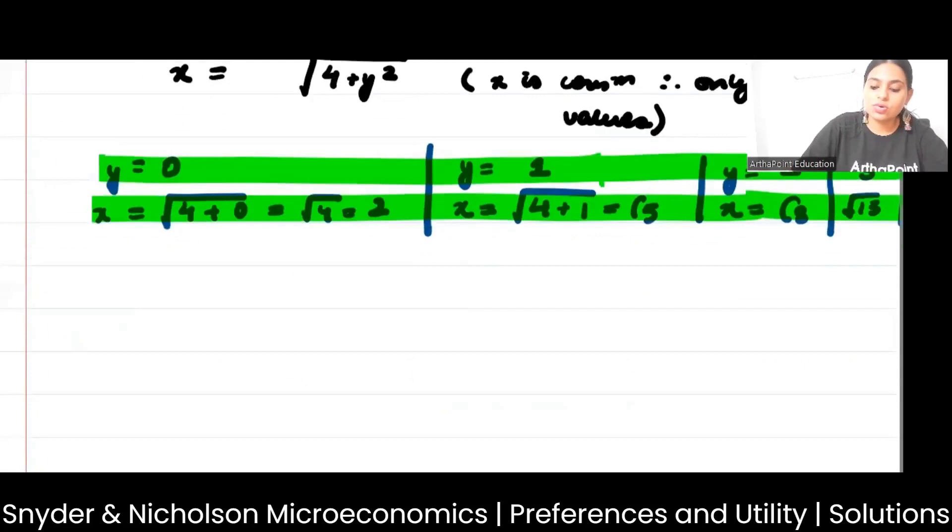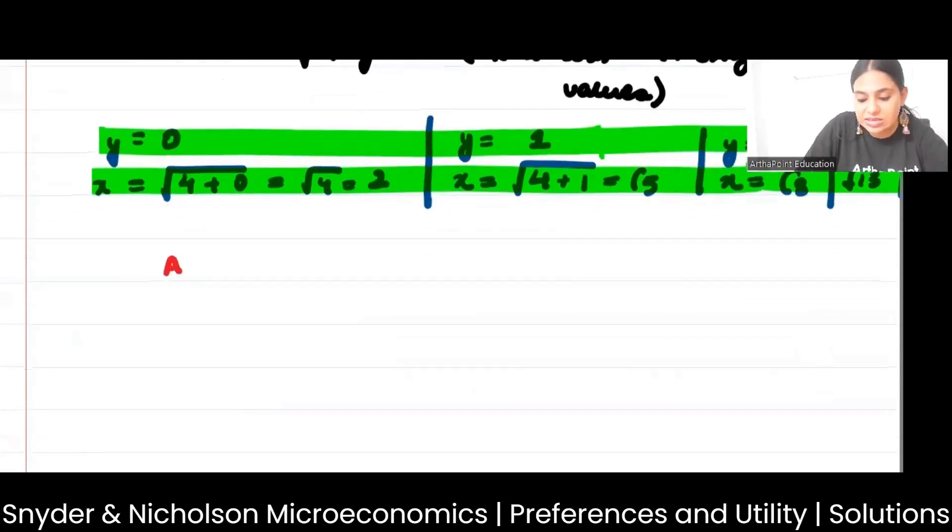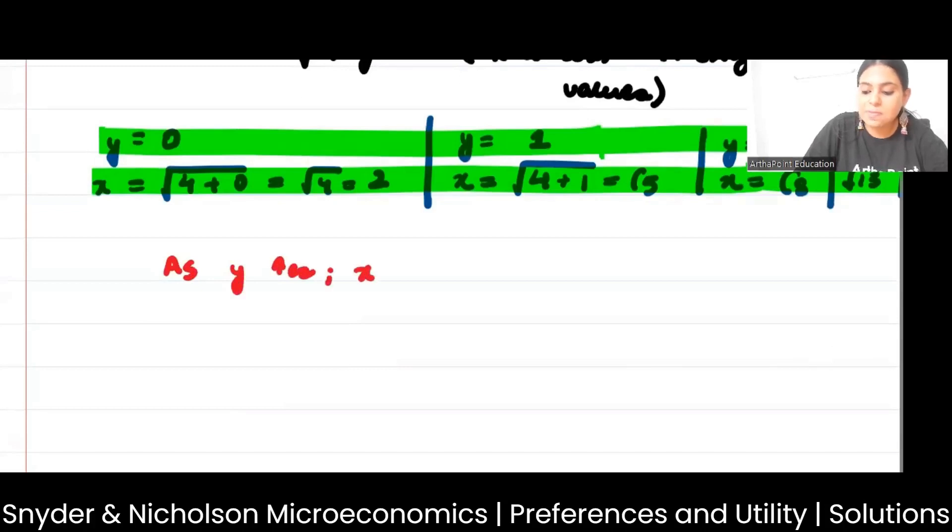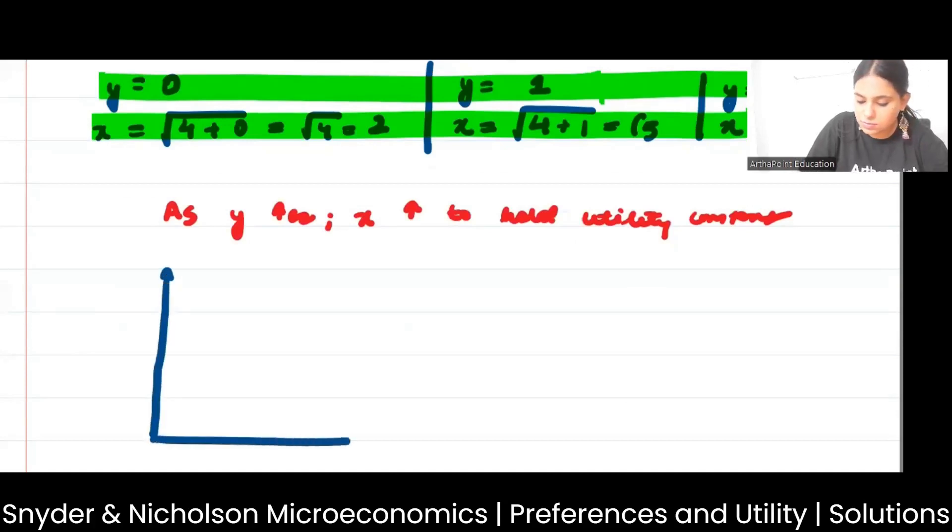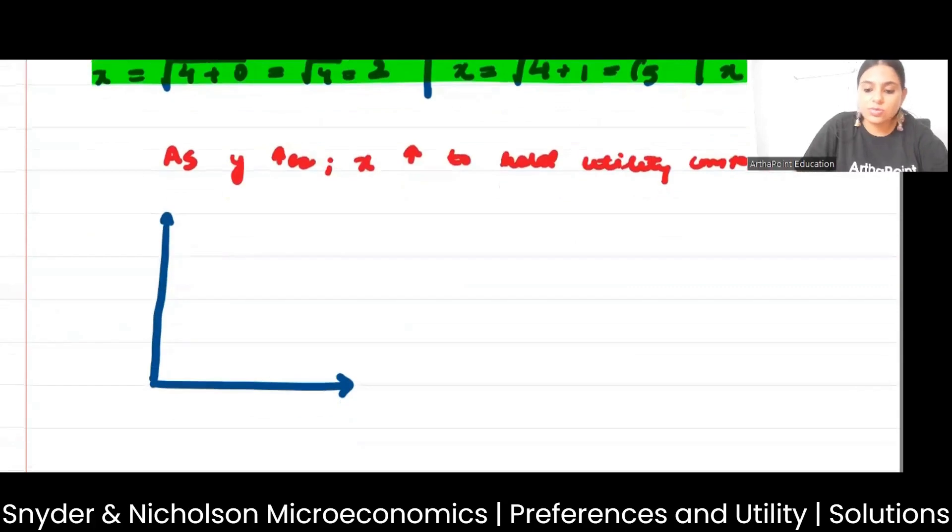So this means that as y increases, x must increase to hold utility constant. So if I have to go ahead and plot this thing, how will I plot it? When y was 0, x was 2.